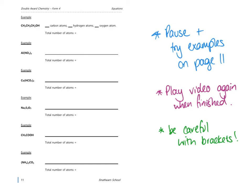On page 11, the first example splits the formula into elements including carbon, hydrogen, and oxygen — note that a symbol may appear more than once, so you total those up. The next example, aluminium nitrate, introduces brackets and you also need to identify the elements yourself. The symbol is Al — A-L, not A-I. Pause the video, give it a go, and press play when you're finished.